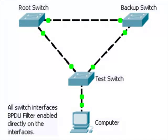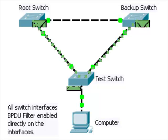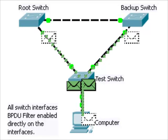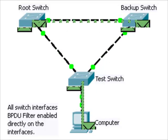Here are three switches and a computer. Let's pretend that we have already configured BPDU filter directly on all the interfaces of all three switches. The switches will not send out any BPDUs and will ignore any received BPDUs. So as far as the interfaces are concerned, spanning tree is not active. The result is that BPDU packets will continue to loop until the network is brought down.